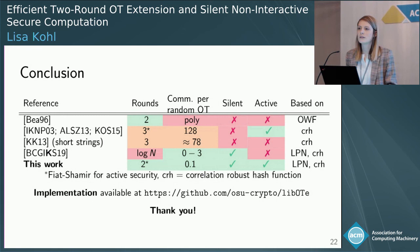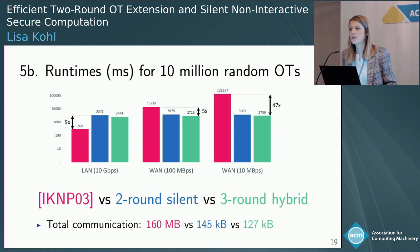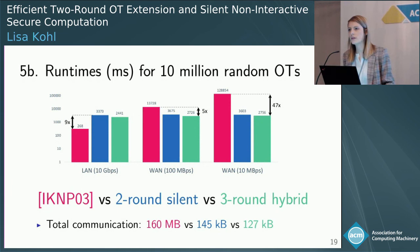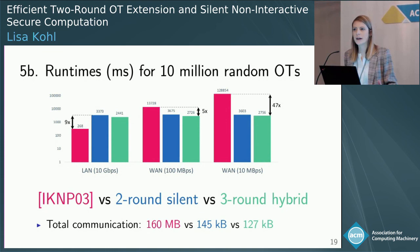Question from audience: What are the bottlenecks? The bottleneck is really the multiplication by this matrix, because it's a huge matrix with dimension 10 million. This is why it's computationally less efficient than IKNP, for example. If you find better codes with faster multiplication, this would directly make this approach even more competitive.